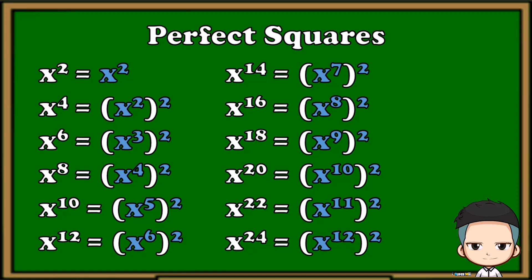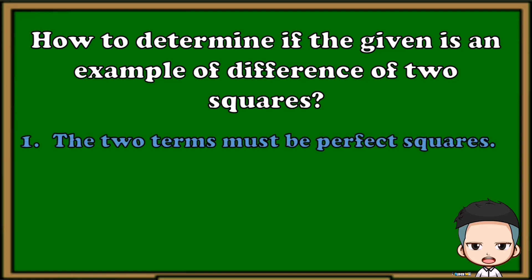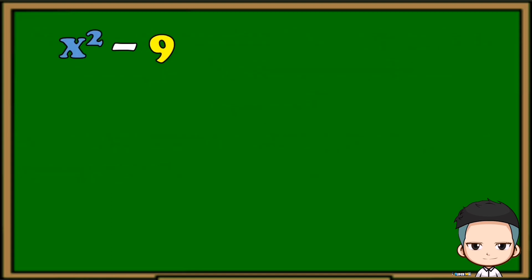For us to determine if a given expression is an example of difference of two squares, we need to check two things: first, the two terms must both be perfect squares; and second, the operation must be subtraction. Those are the two things we need to check before we proceed.